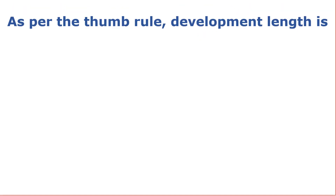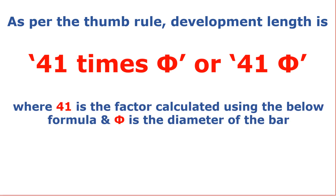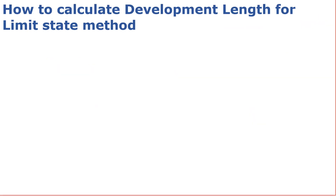As per thumb rule in practice, the development length requirement is expressed as 41 times φ, or 41φ, where 41 is a factor calculated using the formula and φ is the diameter of the bar. Now let us see how to calculate the development length for the Limit State Method with an example.